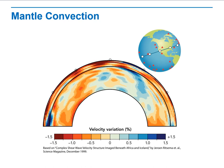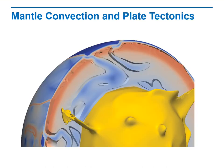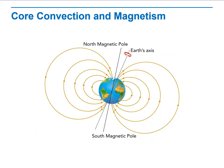Mantle convection. Here we will discuss mantle convection. The rocks are viscous in that they can flow under the right conditions, and they have high viscosity compared to water, which has very low viscosity. We will also cover mantle convection and plate tectonics, as well as core convection and magnetism.